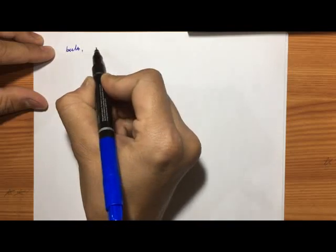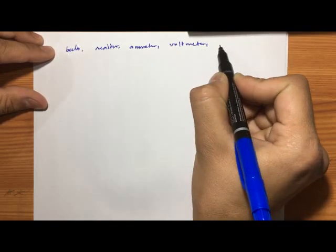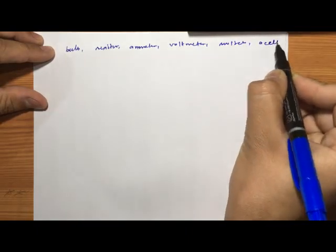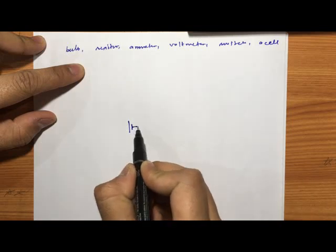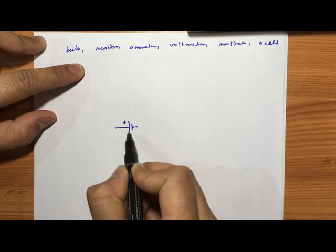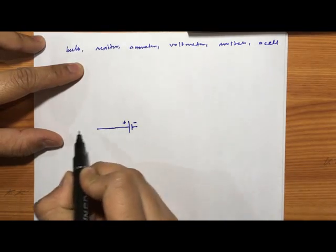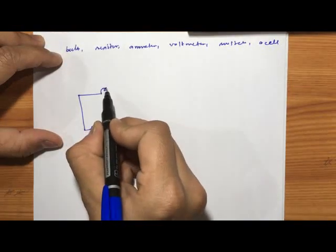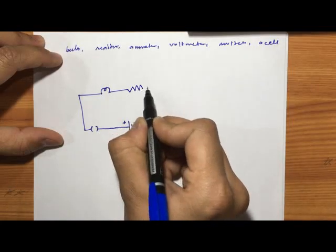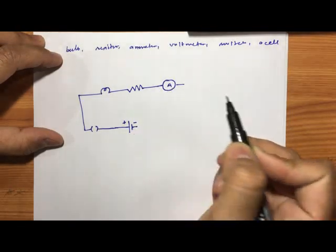We are going to draw a circuit diagram using a bulb, a resistor, an ammeter, a voltmeter, a switch, and a cell. To maintain the potential difference between the terminals, this is the symbol of the cell, in which the larger bar shows the positive terminal and the smaller bar shows the negative terminal. It is connected with a switch, followed by a resistor, a bulb, another resistor, and an ammeter to measure the current. The ammeter is always connected in series.